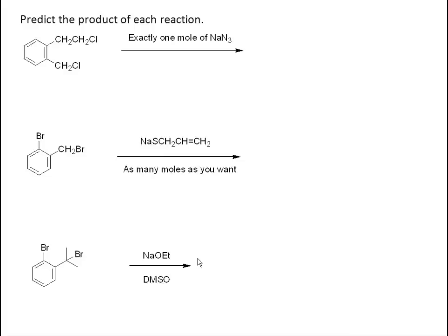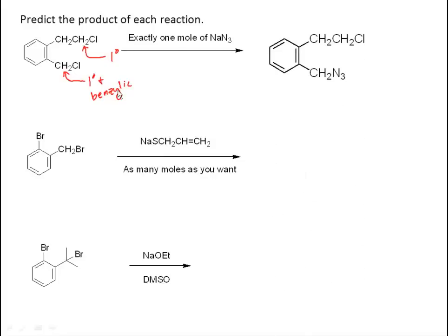Here's an SN2-based question: predict the product of each reaction. In the first one, we take a molecule with two chlorines and treat it with exactly one mole of sodium azide. One carbon is primary; the other is primary and benzylic. We're going to substitute the benzylic one, and that should be the expected product. Primary halides are pretty good, but the benzylic one is better.